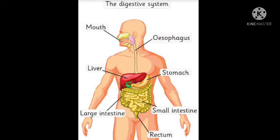The glands of the walls of the small intestine produce intestinal juice. The enzymes of the intestinal juice convert carbohydrates into glucose, fats into fatty acids and glycerol, and proteins into amino acids. The walls of the small intestine have several finger-like projections called villi, which have blood vessels. These help to increase the surface area for absorption of digested food.